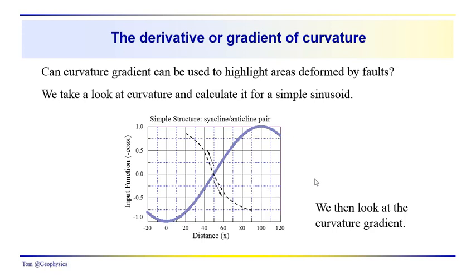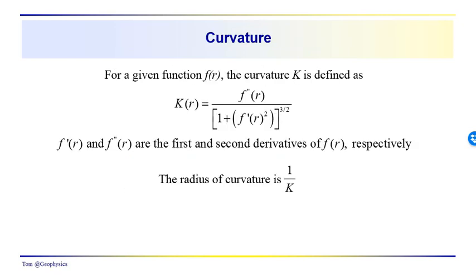We'll start off just by defining what the curvature is. The curvature is defined as follows: if we have a function f of r — in our case it would be the sinusoid — we take its second derivative, then we divide it by one plus the first derivative squared, and take all this to the three-halves power. The radius of curvature is just one over the curvature.